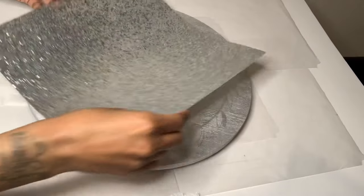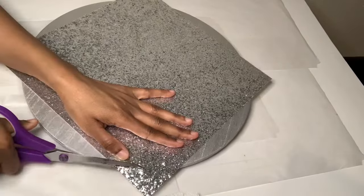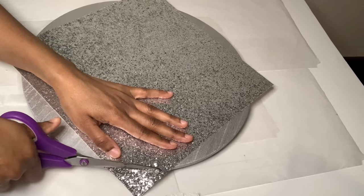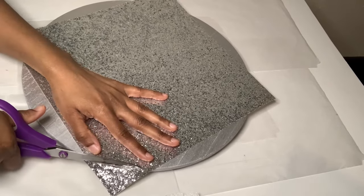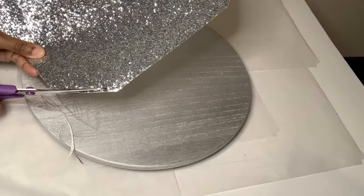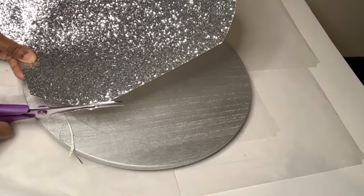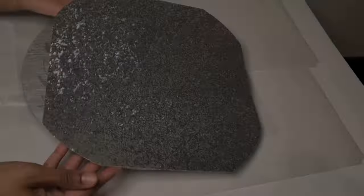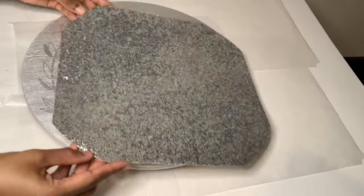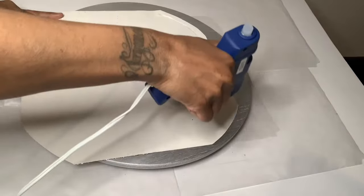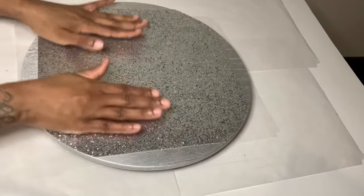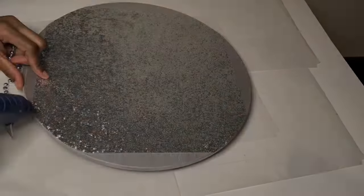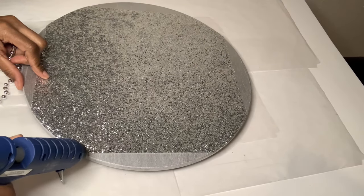For project number two, I'm using this 12 by 12 Recollections glitter paper that I purchased from Michaels, and I'm going to use this to cover up my lazy susan. I'm cutting off the pieces that's hanging over. I'm trimming it to make the edges more straight. It should look like this, and now I'm just going to glue it to my lazy susan.